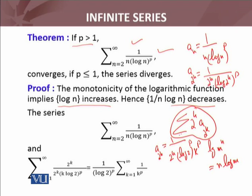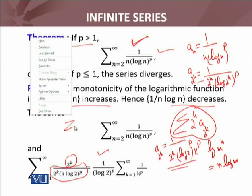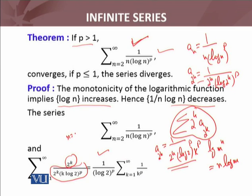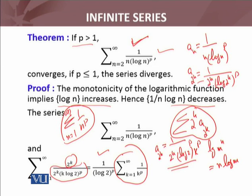So the condensed series takes the form summation of 2^k times a_{2^k}. Since (log 2)^p is a constant, it can be factored out, giving a constant multiple of summation k equals 1 to infinity of 1 over k^p. Compare this to the harmonic p-series summation n equals 1 to infinity of 1 over n^p — the only difference is k instead of n, which is just an index. This harmonic series converges if p is greater than 1 and diverges if p is less than or equal to 1.